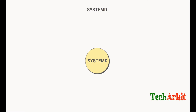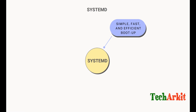systemd aims to improve boot times through parallelization and efficient service management. In the previous INIT, execution was sequential — one service had to start before moving to the next. With systemd, most services can start in parallel, and dependencies can also be handled effectively. Additionally, systemd can manage file system mounts, including mounting and unmounting drives.